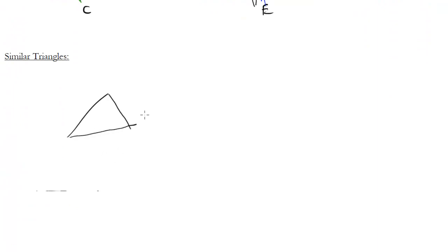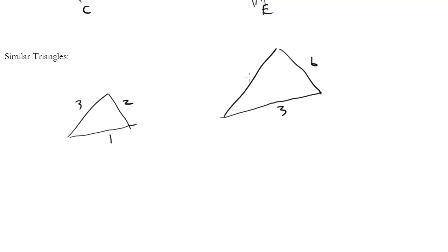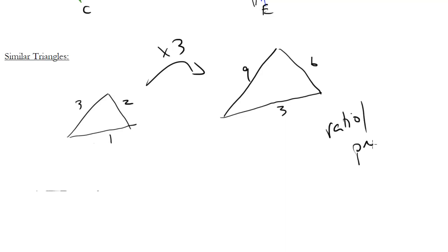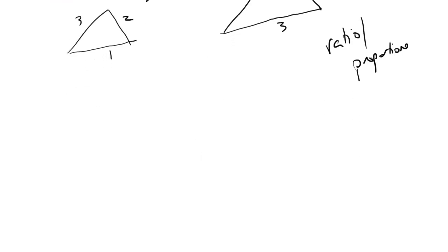Let's move into similar triangles — this is where it really matters. Two similar triangles are the same proportion; one is just a blown-up version of the other. If I label the sides 1, 2, and 3, and the larger triangle has sides 3, 6, and 9, it's as if I blew the small triangle up by a factor of 3. Similar triangles are dilated copies of each other, and this is where ratios and proportions come in: 1 to 2 is the same ratio as 3 to 6, and 2 to 3 is the same as 6 to 9. We'll see examples in the tactics videos.